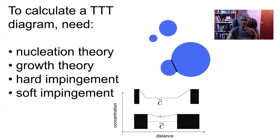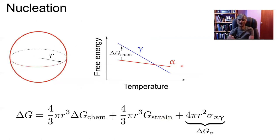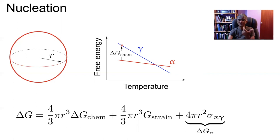Nucleation theory has many nuances, but the essence is as follows. Consider two phases in an allotropic transformation with free energies of alpha and gamma plotted as a function of temperature. Where they cross, they have identical free energies — that is the transition temperature. When we supercool the austenite (parent phase gamma) to a temperature below the transition temperature, there will be a driving force encouraging alpha to grow: the free energy of alpha minus the free energy of gamma, a negative quantity — a reduction in free energy.